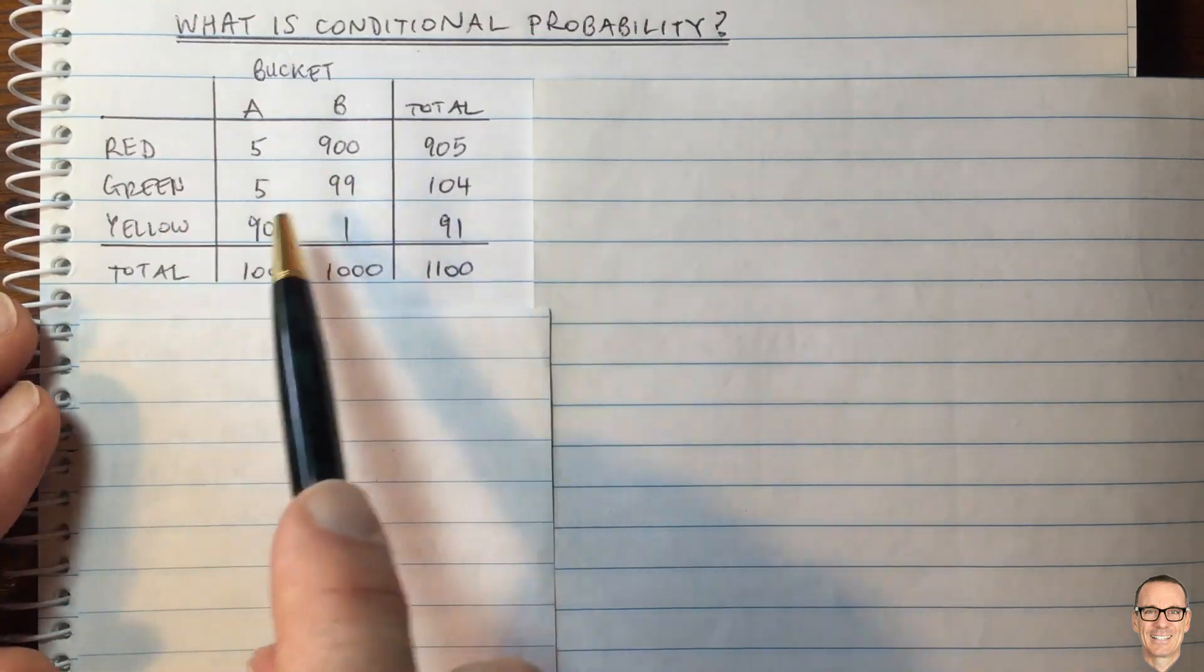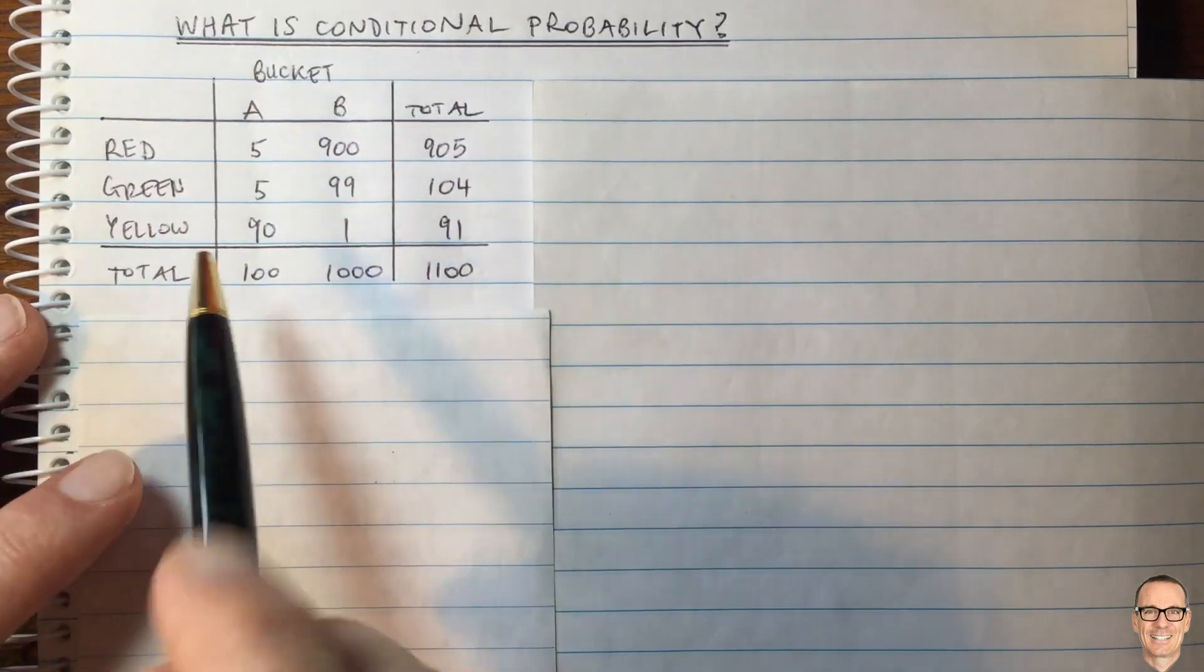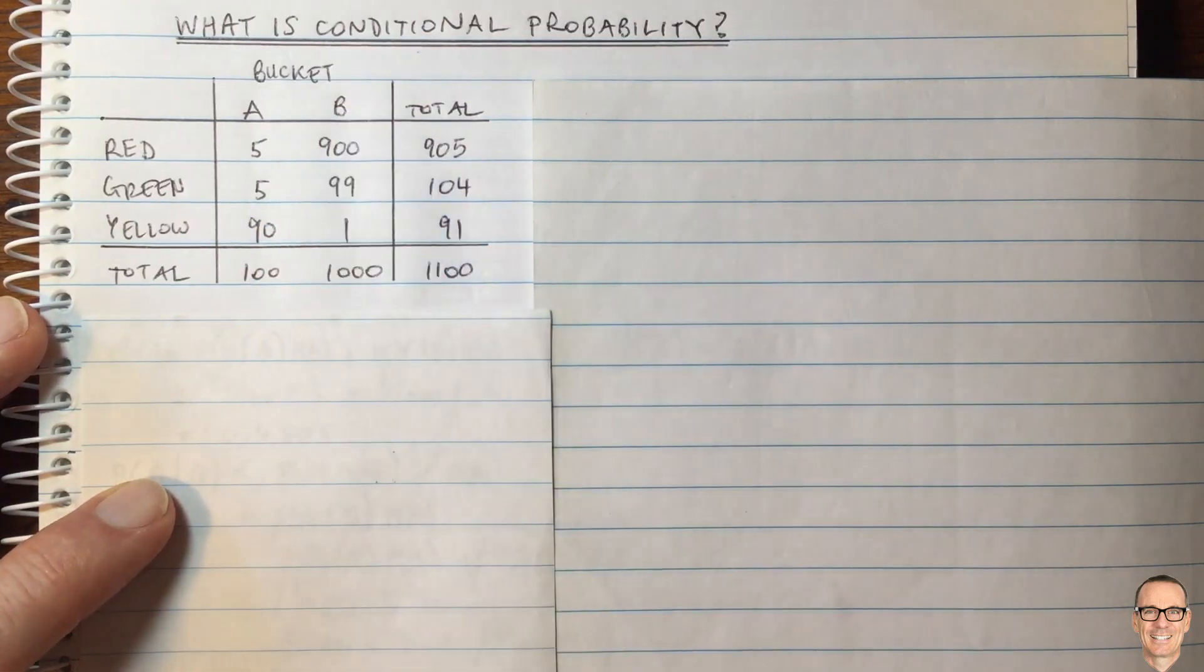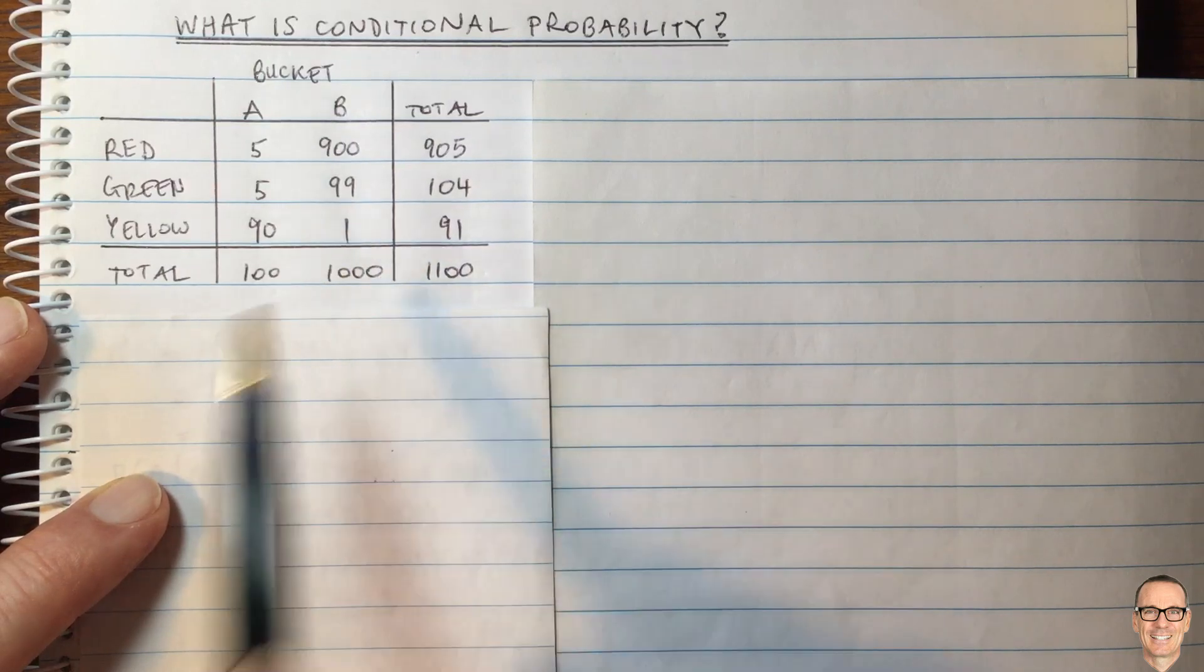Let's look at that more closely. If we only had bucket A, then the chance of getting a yellow ball is 90 out of 100. If we only had bucket B, it's a much smaller chance of 1 out of 1000.